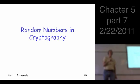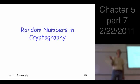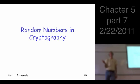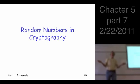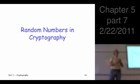Where did we use random numbers? One-time pads. Where else? Keys in general, right? All the keys we talked about — symmetric keys for sure. We wanted Alice and Bob to share a symmetric key, so we'd generate a random symmetric key and distribute it to Alice and Bob.